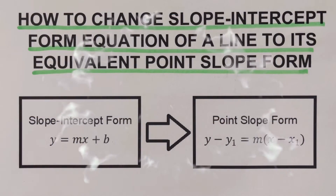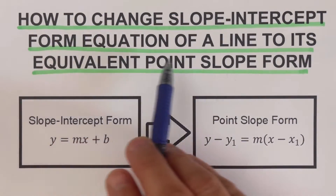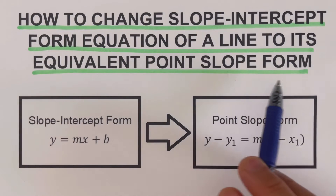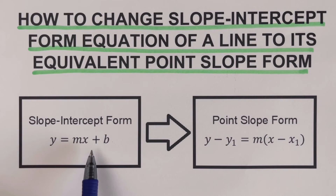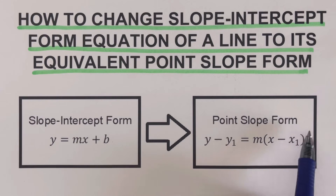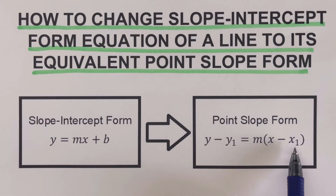Hello everyone. This video will show how to change slope-intercept form of a line to its equivalent point-slope form. We are given the slope-intercept form y equals mx plus b, and we're supposed to transform this to its equivalent point-slope form y minus y sub 1 equals m quantity x minus x sub 1, where the coordinate x sub 1, y sub 1 is one of the points on the line.